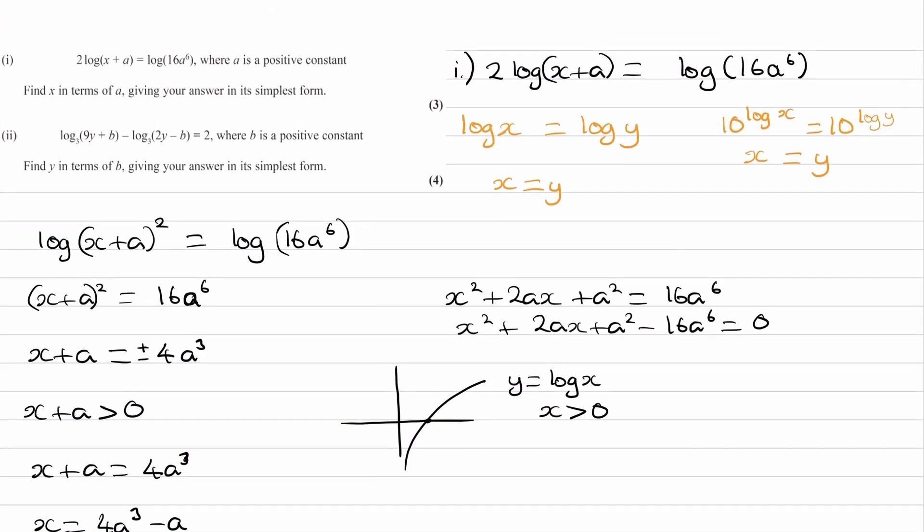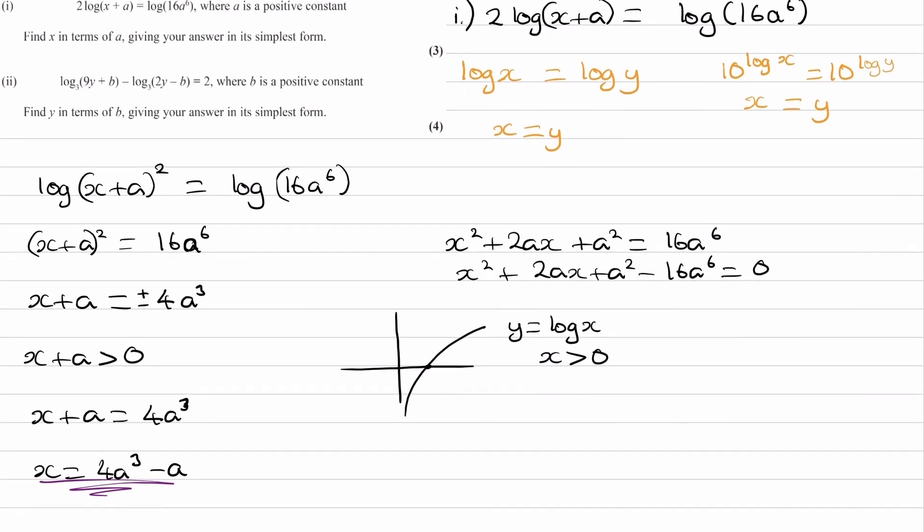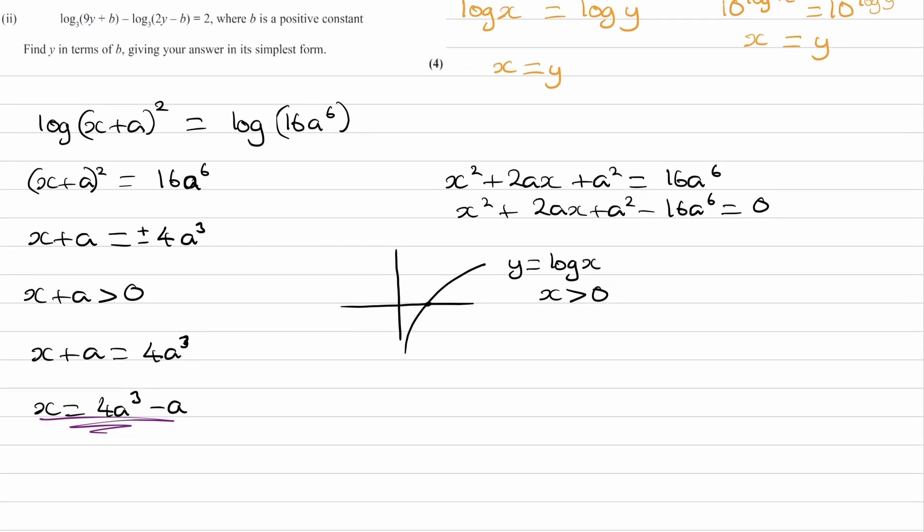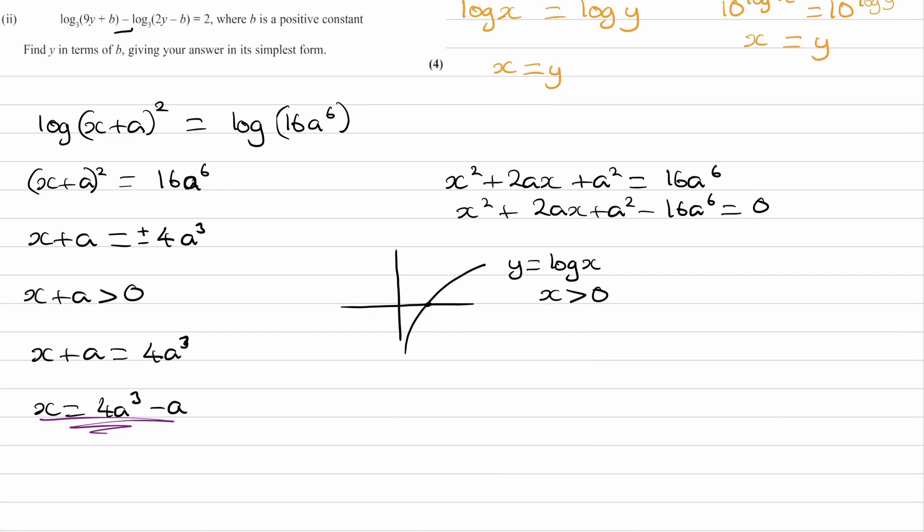So for part 2, part 2 is pretty straightforward. For this one, you want to think about how you can get rid of this minus sign, how you can convert it into something else, and then you want to think about how you can get rid of the logs.